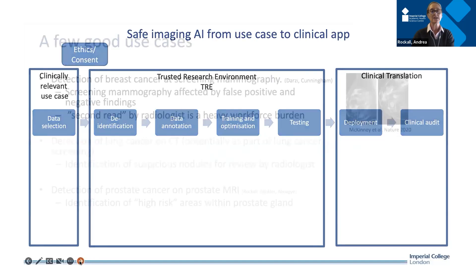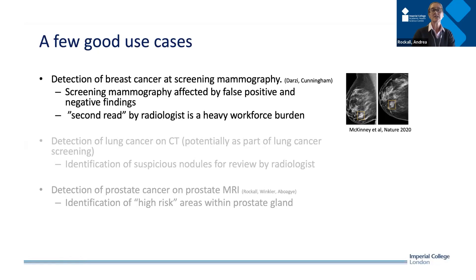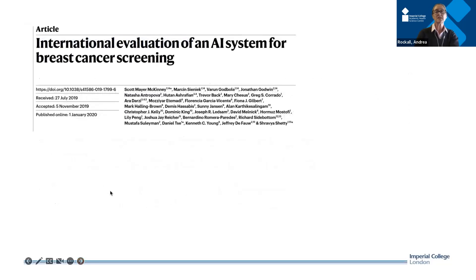I'm going to talk about clinically relevant use cases with three examples, all part of ongoing work at Imperial. The first is detection of breast cancer at screening mammography. This is important because screening mammography is undertaken on a population basis, but we have false positives — where a radiologist picks up what they think is a tumor that turns out to be benign — and false negatives, where we miss a tumor. Two radiologists read each scan, creating a heavy workforce burden.